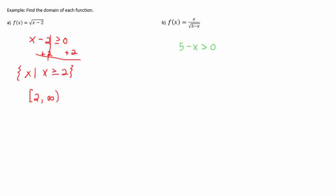So that's the only reason why this is greater than or equal to zero on the first one, and it's not equal to on the second one. So I need to solve this, so I'm going to subtract five and get negative x is greater than negative five.